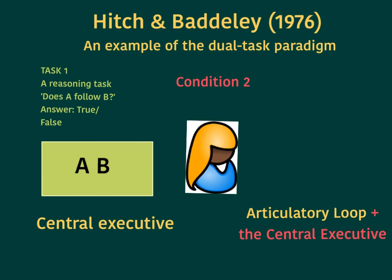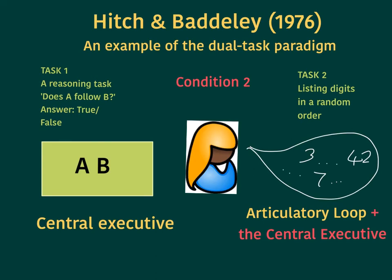In condition two, the first task remained the same — a reasoning task where letters were flashed upon a screen and participants had to work out whether the answer was true or false, again using the central executive. However, the second task was changed to listing digits in a random order. This still uses the articulatory loop, but because you have to pick a new random digit unconnected to the others each time, the central executive also needs to be used for this reasoning aspect. Consequently, in condition two, the central executive was being used for both tasks, splitting its attention between them.